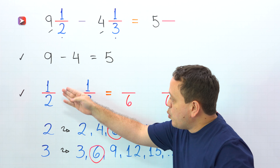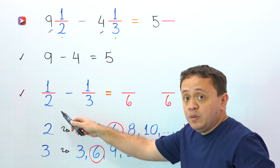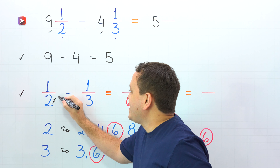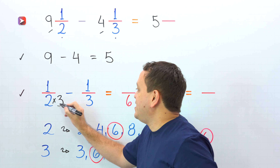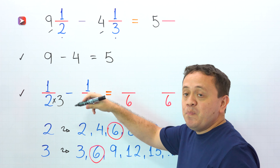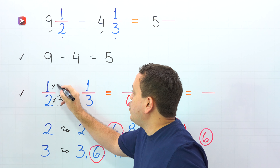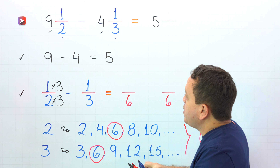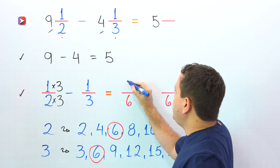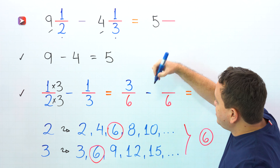Let's start with 1 half. By what number should I multiply 2 to get 6? By 3 — because 2 times 3 is 6. Whatever we do to the bottom, we must do to the top, so we multiply by 3 up here. And 1 times 3 gives us 3. Then we have the minus sign.